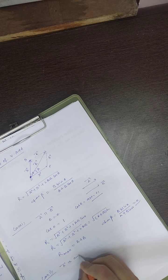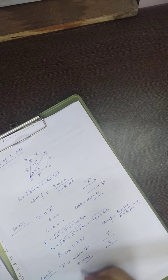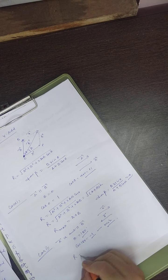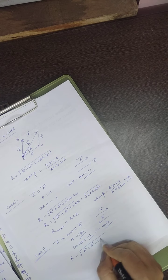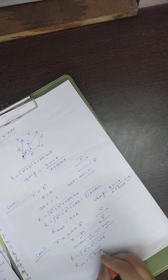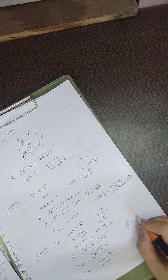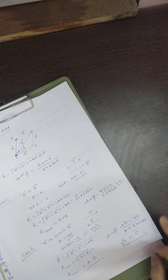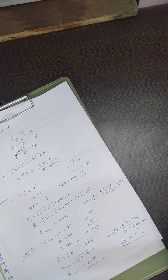Case 2: if A is anti-parallel to B — meaning A is in one direction and B is in the opposite direction — then theta = 180°. Cos 180° = −1, which is the minimum value of cos theta. So R = √(A² + B² − 2AB) = √(A − B)² = A − B. This is R minimum. Also, tangent β = B sin180° / (A + B cos180°) = 0, since sin 180° = 0. The direction of the resultant is along the direction of the vector with greater magnitude.